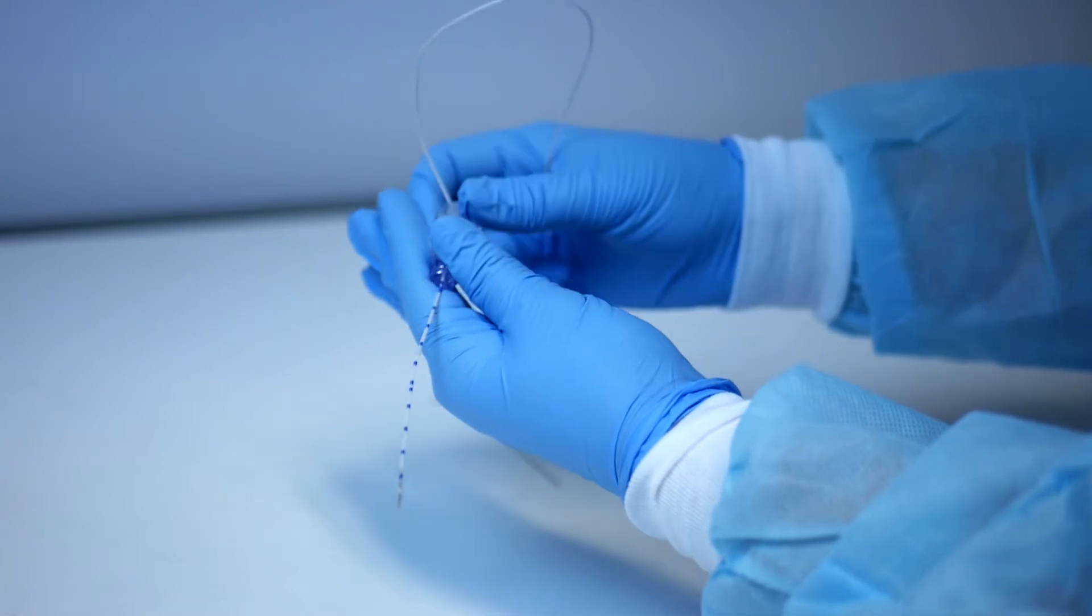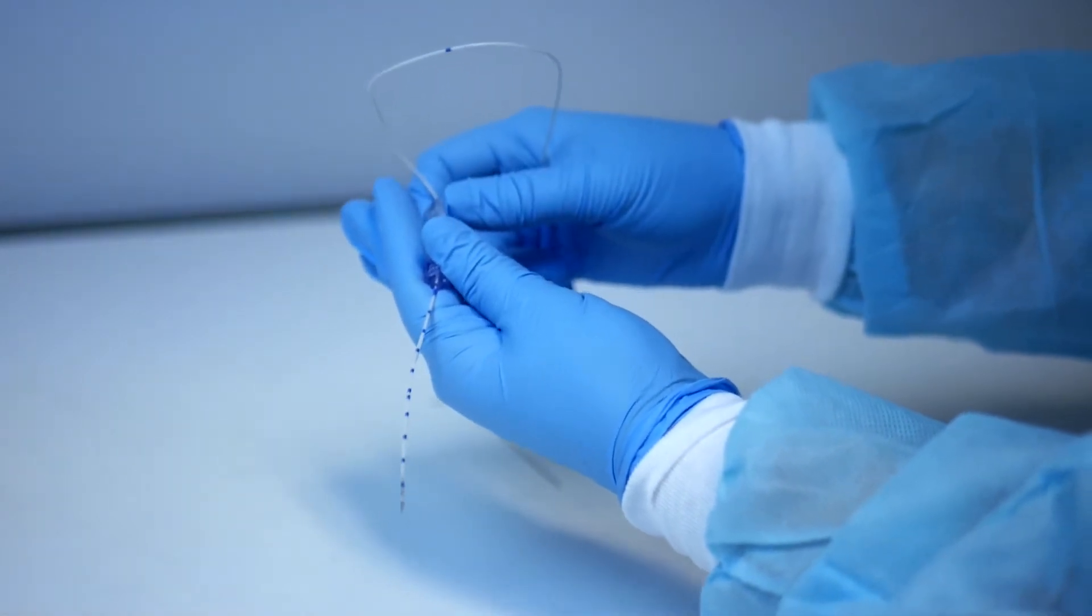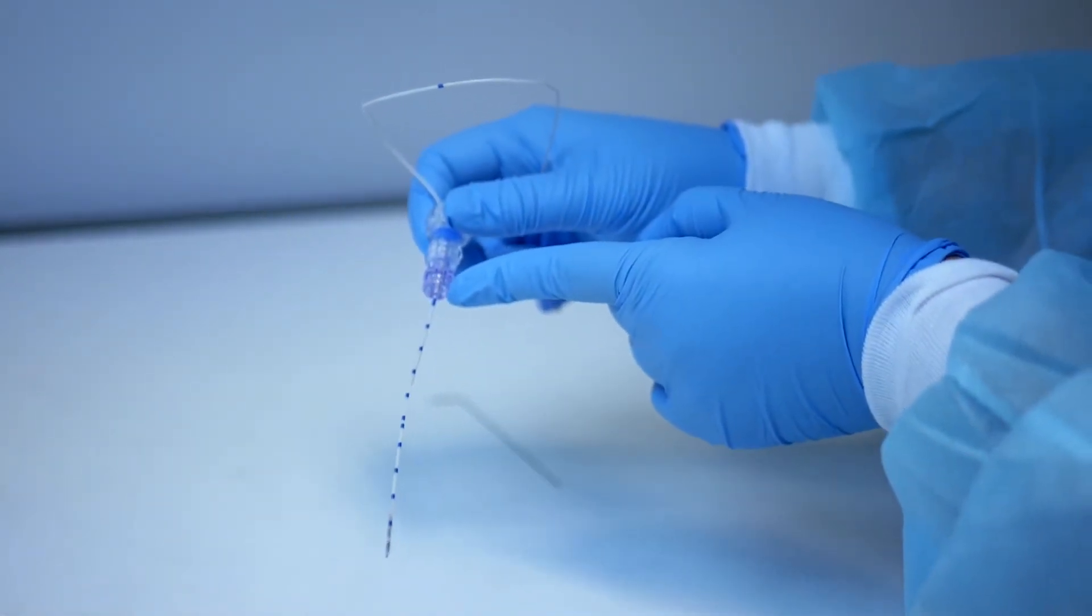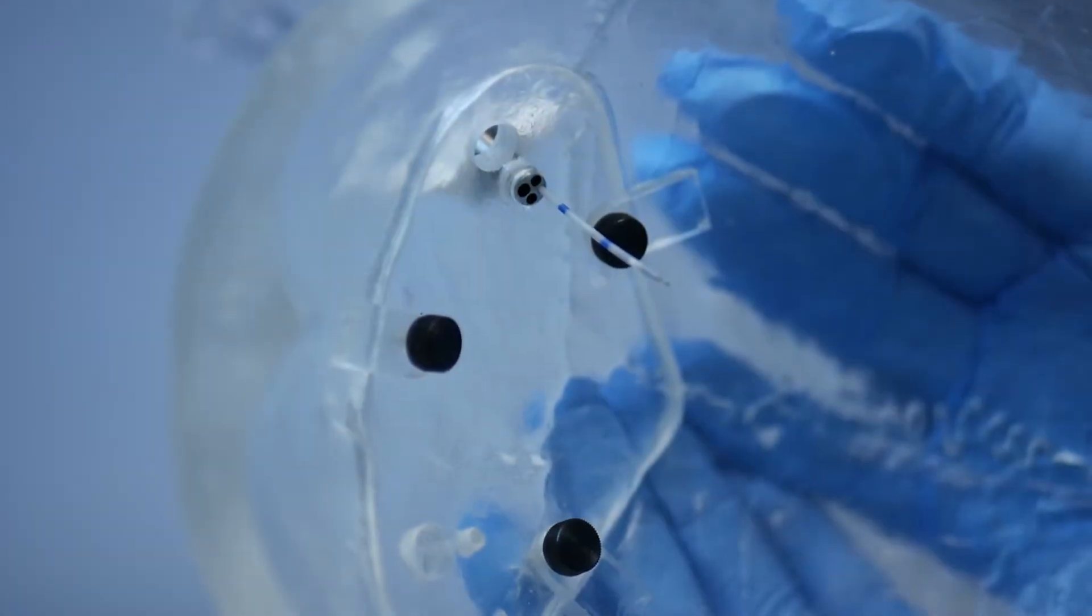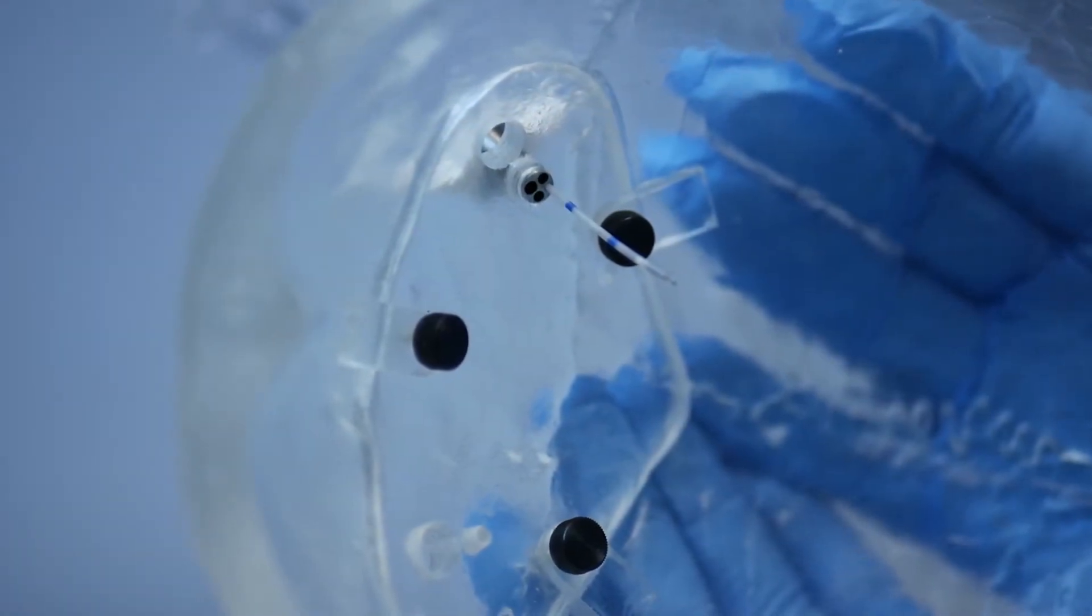This preloading technique ensures the perfusion probe is placed at the ideal depth between 2.5 and 3 cm below the dura. Set the preloaded assembly aside.